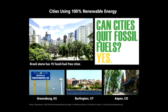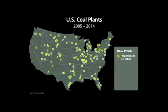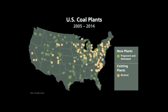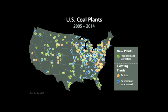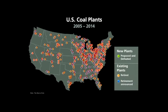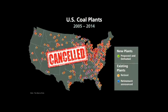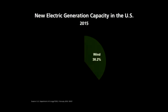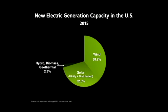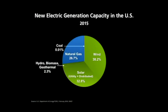Entire cities are also converting to 100% renewable energy. There are five cities in the U.S., and Brazil alone has 15 fossil-fuel-free cities. These cities are cleaning up their air quality, increasing their bottom line, and feeling great about energy independence. Like much of the world, the U.S. is moving away from coal. Here are all the new plants proposed and defeated in the U.S. since 2005, and all the existing plants already retired. Even though it hasn't sunk in for our president, coal is essentially dead in the United States as a source of electricity production.